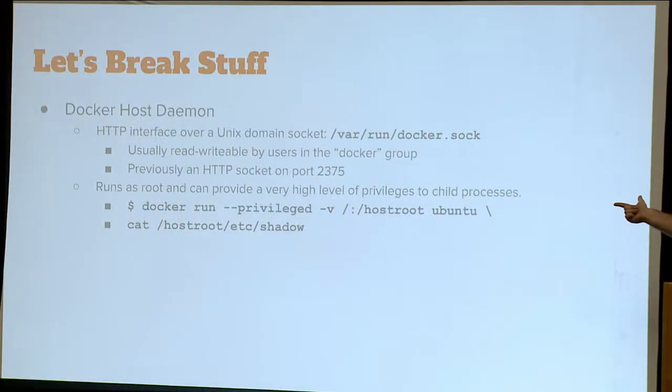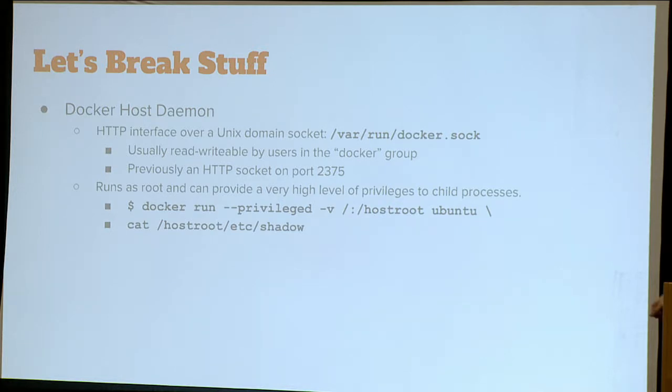/var/run/docker.sock is usually owned by a Docker group and has read-write permissions for that group. If you put a user in the Docker group, they can just do stuff with it. This is problematic and can result in privilege escalation problems. The Docker socket has rights to do a whole lot of stuff on the host. In this case, we're telling it to run in privileged mode, running as root, and mounting slash to a directory called /hostroot inside the container, then cat-ing /etc/shadow from the host. I've seen folks put in sudoers: sudo docker run * with no password — and that is exactly the same as running sudo without a password.